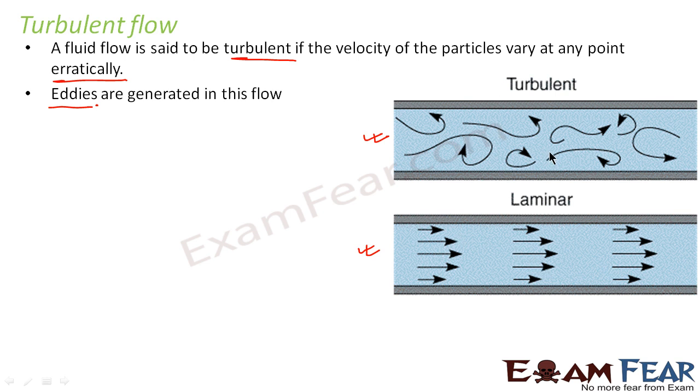Whereas, when it comes to turbulent flow, you can see that all the particles are moving randomly here and there in any direction they want. So turbulent flow is completely the opposite of laminar flow.